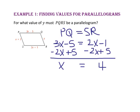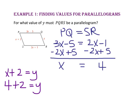Since we are looking for the value of Y and we know that the length of segment QR must be congruent to the length of segment PS, we substitute 4 in for X. So, 6 will equal Y.